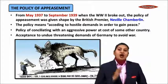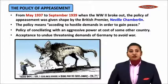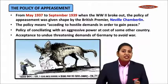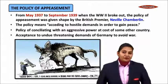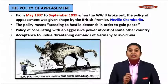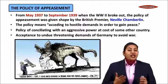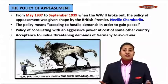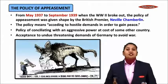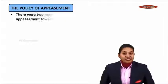Policy of conciliating with an aggressive power at the cost of some other country is what appeasement means. Acceptance of undue threatening demands of Germany in order to avoid war is what England and France were doing. Rather than taking strict action against the German dictator Adolf Hitler, they allowed Hitler to grow. That is why Hitler openly flouted the clauses of the Treaty of Versailles.